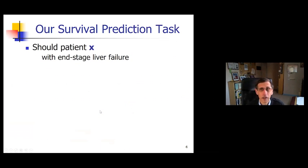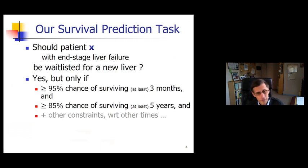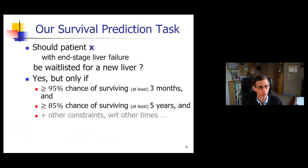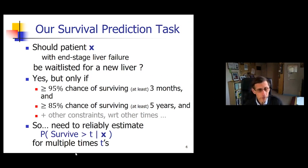Thank you for inviting me. Today I'm going to talk about patient-specific survival prediction, or more precisely, an effective way to estimate an individual's survival distribution. Let me start by a question posed to me by liver specialists. Here's a patient with end-stage liver failure. Should this patient be waitlisted for a new liver? The answer is yes, if there's a 95% chance of surviving at least three months, an 85% chance of living five years, maybe some other constraints.